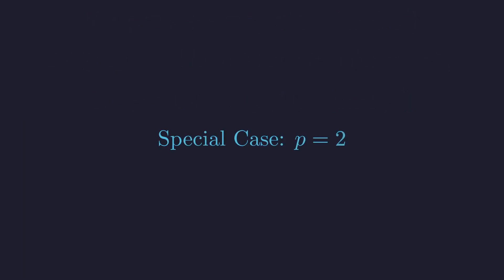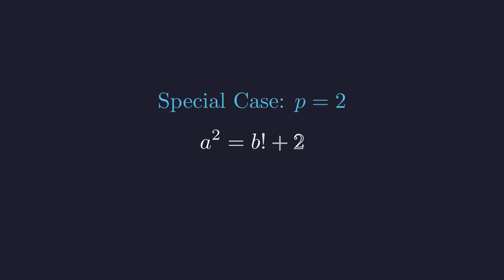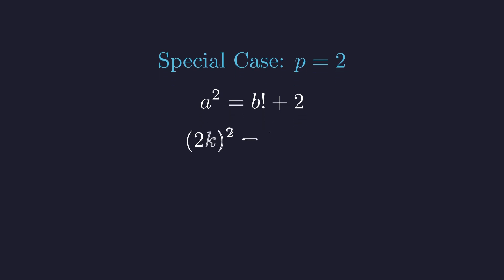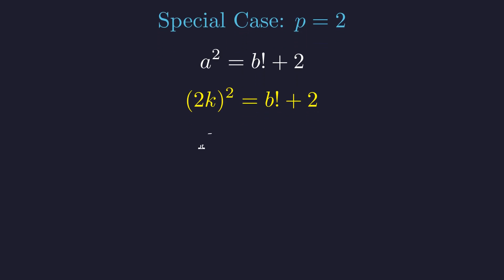The case P equals 2 requires special attention because P squared equals P to the power P equals 4. Let's check this case directly. The equation becomes A squared equals B factorial plus 2. Since A is even, let it equal 2K. Substituting A with 2K and expanding the squared term on the left side, 2K all squared becomes 4K squared. To isolate the factorial, we move the 2 to the other side.